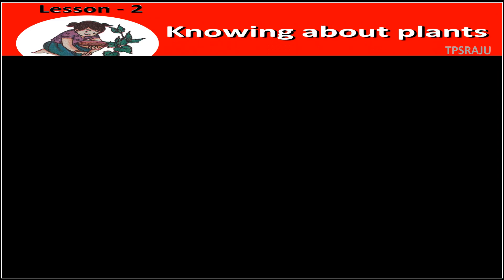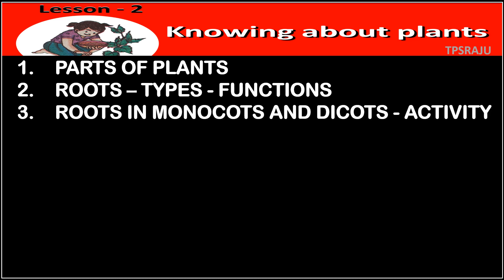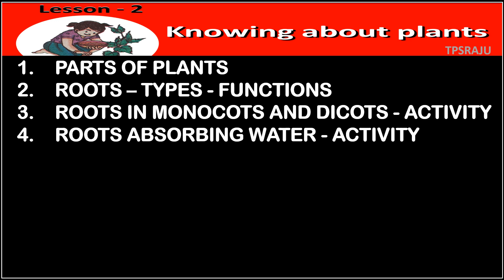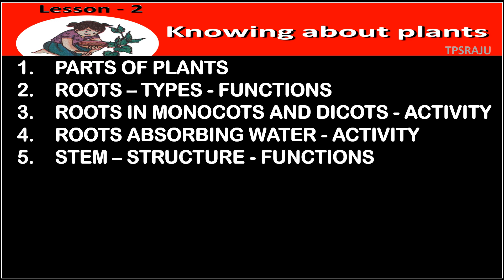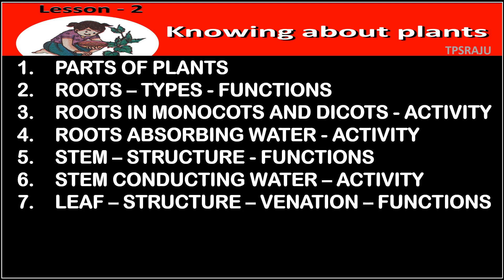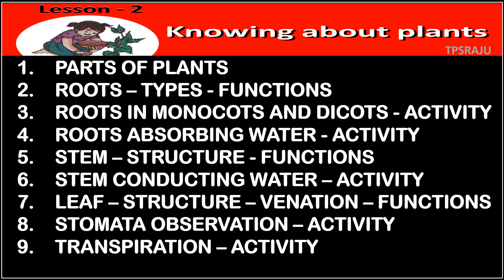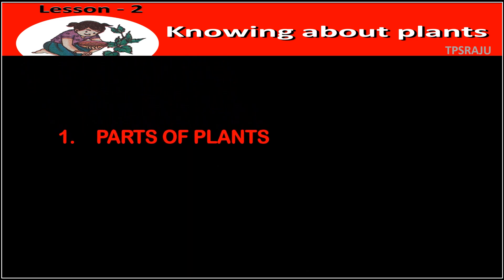In this lesson, there are 10 topics: parts of plants, roots types and functions, roots in monocots and dicots activity, roots absorbing water activity, stem structure and functions, stem conducting water activity, leaf structure, venation and functions, stomata observation activity, transpiration activity, and flowers. Today we are going to learn about the first topic, that is parts of plants.